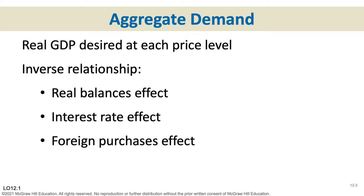None of those three reasons — income effect, substitution effect, and diminishing marginal utility — are applicable in the aggregate demand model. Those applied to a single-product demand curve. But in aggregate demand, where it's the demand for everything the economy produces, those three reasons do not apply. Instead, we have three new reasons.